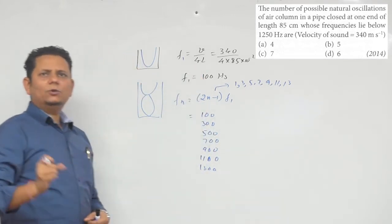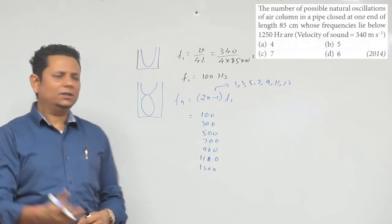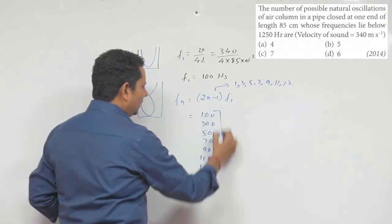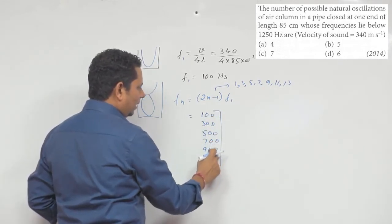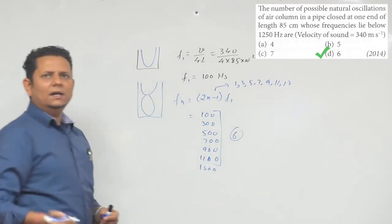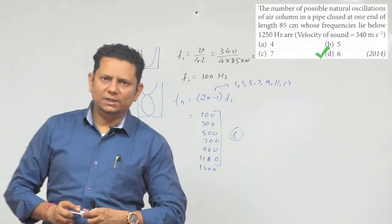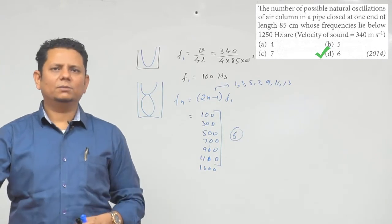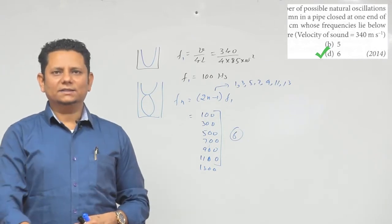Now we have given you that 1250, which will be natural frequency. So this is our answer, which is 6 frequencies you can see here. So based on this, we can say that option number D would be the right answer. Thank you so much.